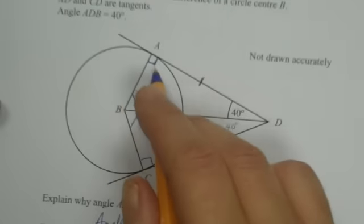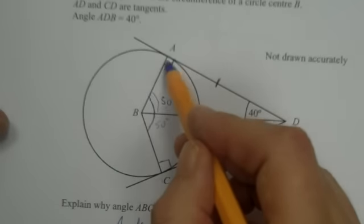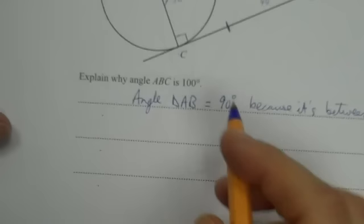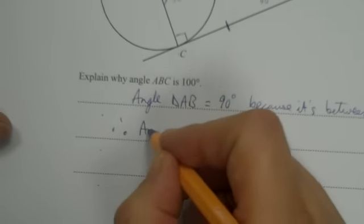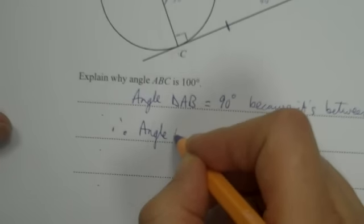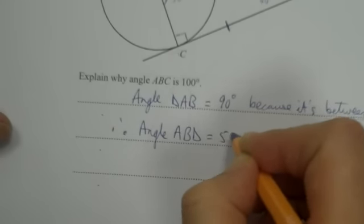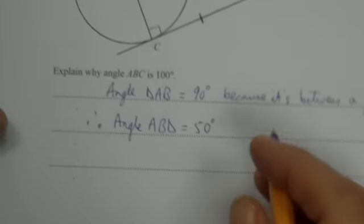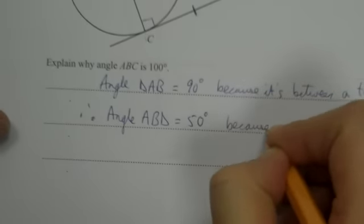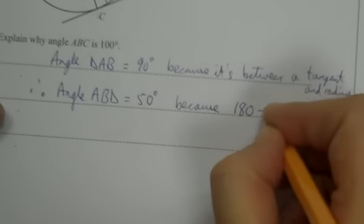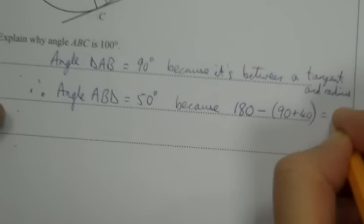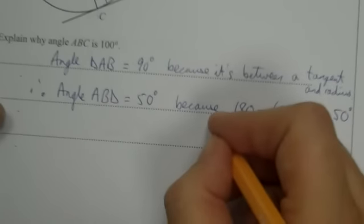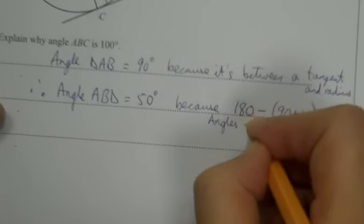And I've shown it in the diagram up here. And then I'm going to say, I'm talking about this angle now, ABD. Therefore, three dots like this for therefore, angle ABD is 50 degrees, because 180 take away 90 and 40 makes 50. And this is because it's angles in a triangle.